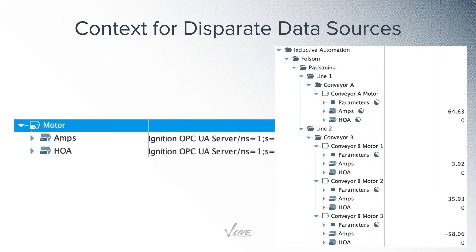Using a standard structure like this is particularly important when you talk about enterprise deployments, where you might want data that gets rolled up and compared across multiple sites. Having the data structured the same across those multiple sites is going to make it easier to do those kinds of comparisons and look at data in aggregate at the enterprise level.